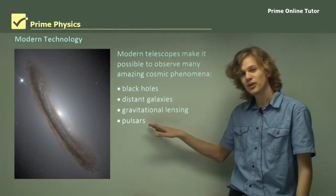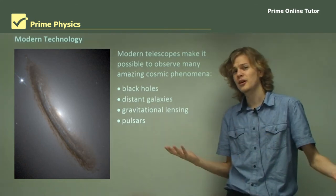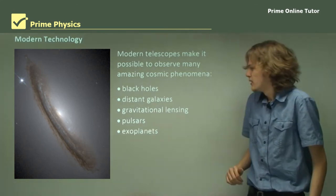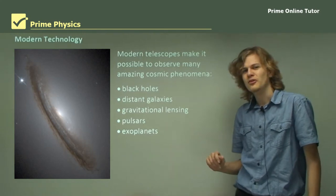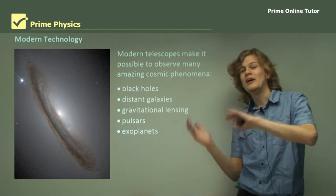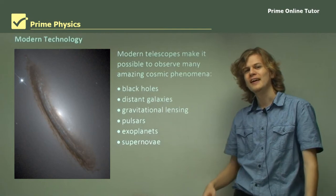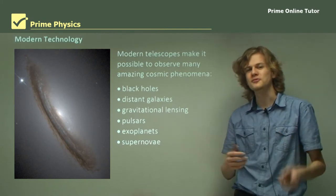We can observe pulsars, which are, as far as we can tell, spinning neutron stars or something. And exoplanets, one of the more interesting parts of astrophysics, which are planets orbiting around other stars. And supernovae as well, which are gigantic explosions caused by the collapse of stars.